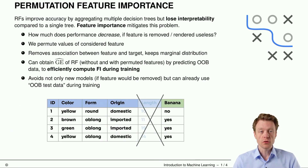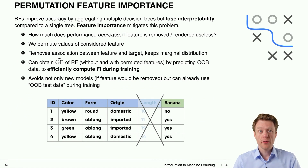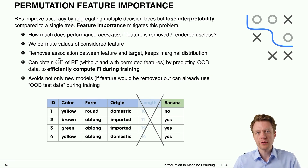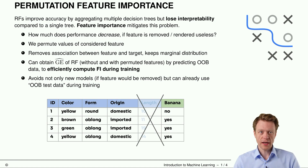We will start with permutation feature importance. A good thing about random forests is that it improves the predictive performance of individual decision trees by combining them, but the downside is that we lose interpretability. Feature importance tries to mitigate this problem.